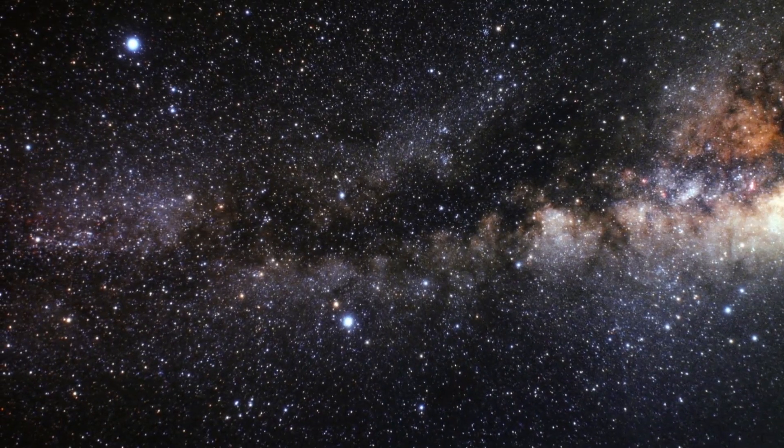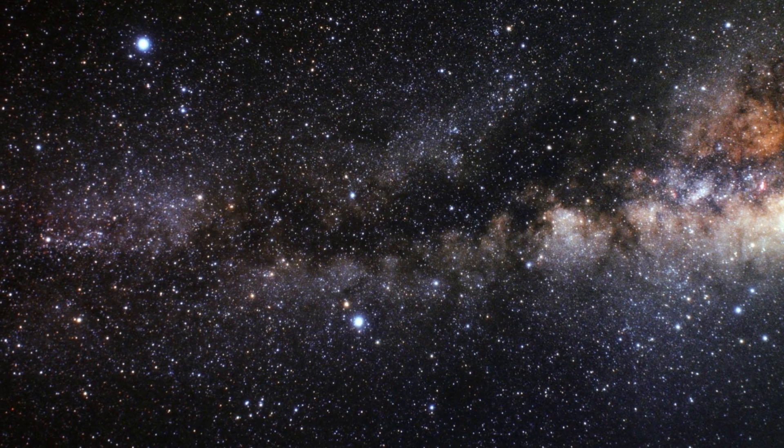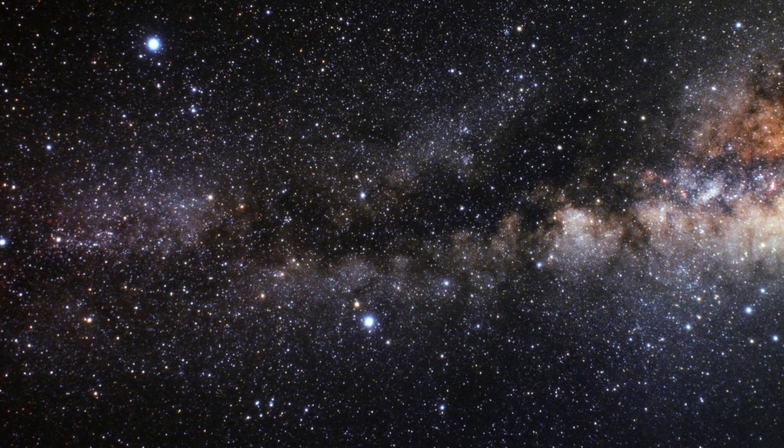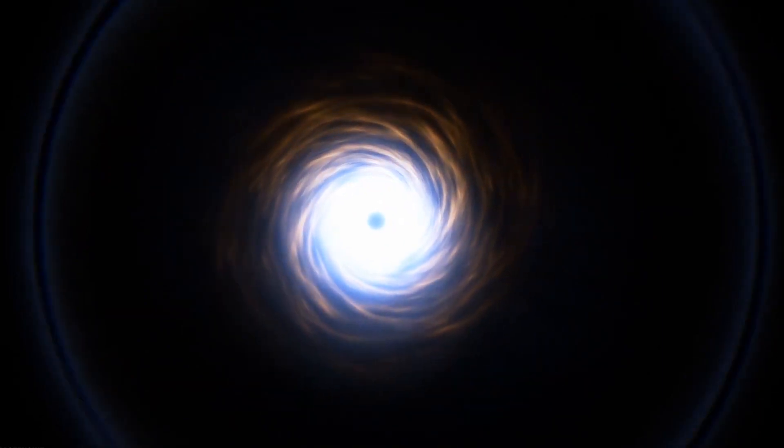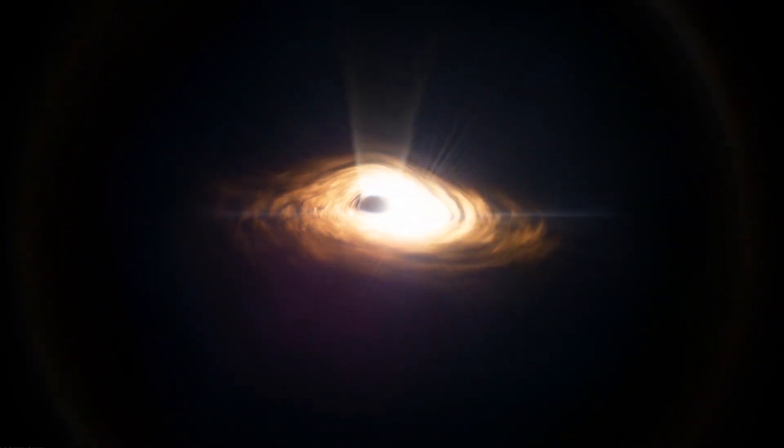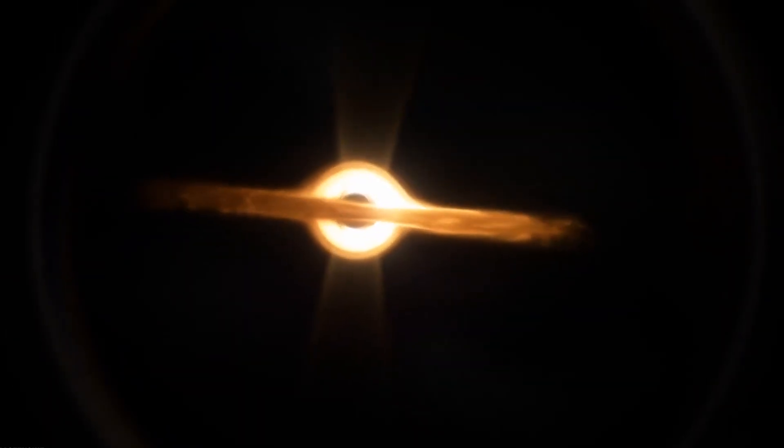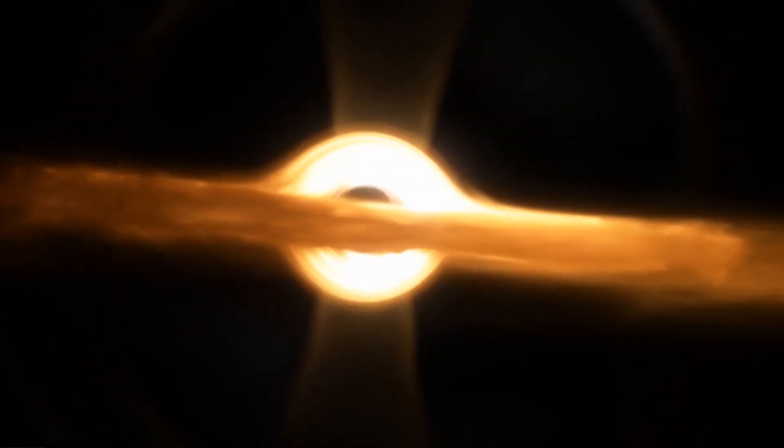But accretion disks might not surround all supermassive black holes at one time. Some are what's known as quiescent. This means they may or may not have accretion disks and have eaten up all of the gas and dust that was floating around their gravitational range. Pretty wild if you think about it. So you see, there's really no way to find any radiation around them to detect them since we can't even see them.